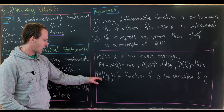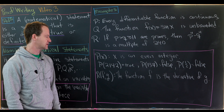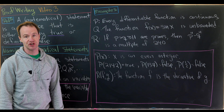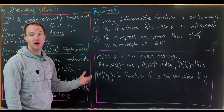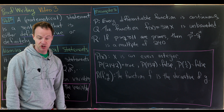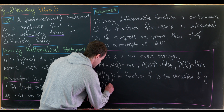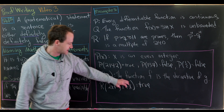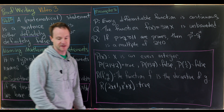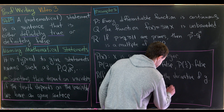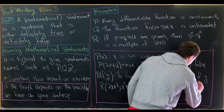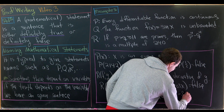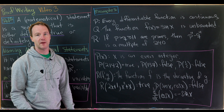Let's look at another open sentence: r(f, g), depending on two function variables. The open sentence says 'the function f is the derivative of the function g.' If we plug in f = 2x + 1 and g = x² + x, we get a true statement, since the derivative of x² + x is indeed 2x + 1. But if we plug in f = sin x and g = cos x, we get a false statement, because the derivative of cos x is in fact −sin x — we're off by a sign.